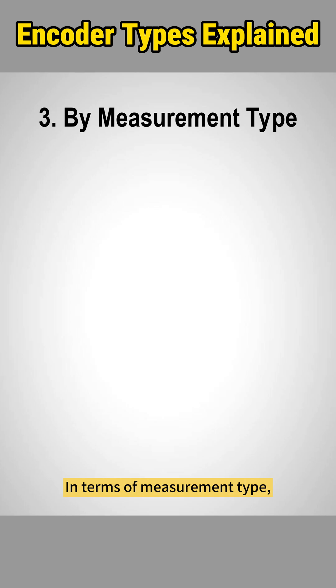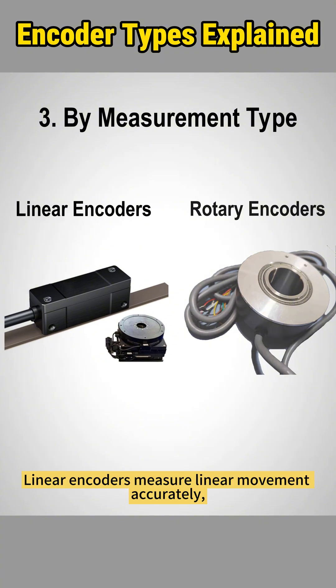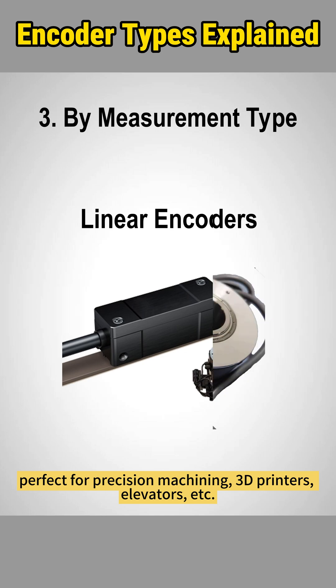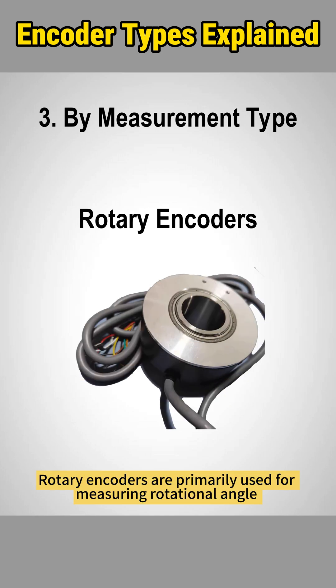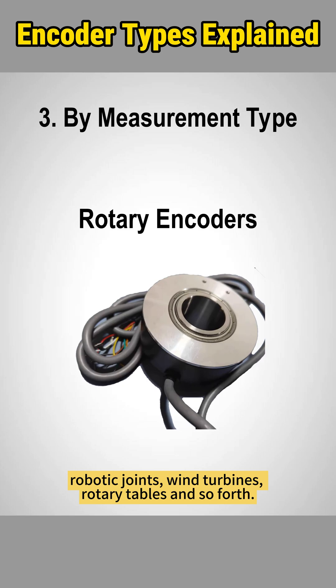In terms of measurement type, encoders can be divided into rotary encoders and linear encoders. Linear encoders measure linear movement accurately, perfect for precision machining, 3D printers, elevators, and more. Rotary encoders are primarily used for measuring rotational angle and speed of the shaft. They find common use in motors, robotic joints, wind turbines, rotary tables, and so forth.